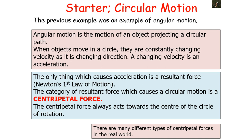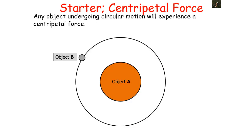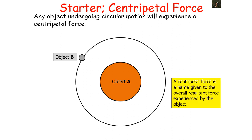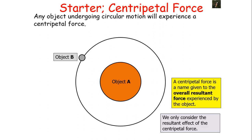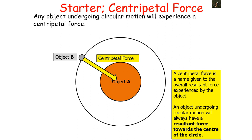The centripetal force always acts towards the centre of the circle of rotation. There are many types of centripetal forces in the real world — for example, there is a centripetal force causing the Earth to orbit the Sun, one causing the Moon to orbit the Earth, and one causing a car to go around a roundabout. That force can be friction, gravitational attraction, or electromagnetic attraction. Any object undergoing circular motion will experience a centripetal force, which is the name given to the overall resultant force experienced by the object acting towards the centre of the circle.